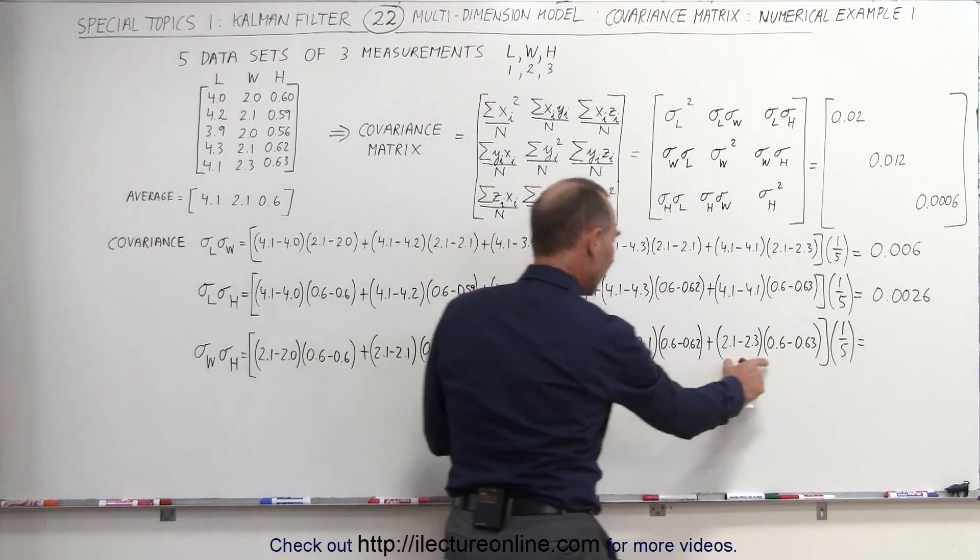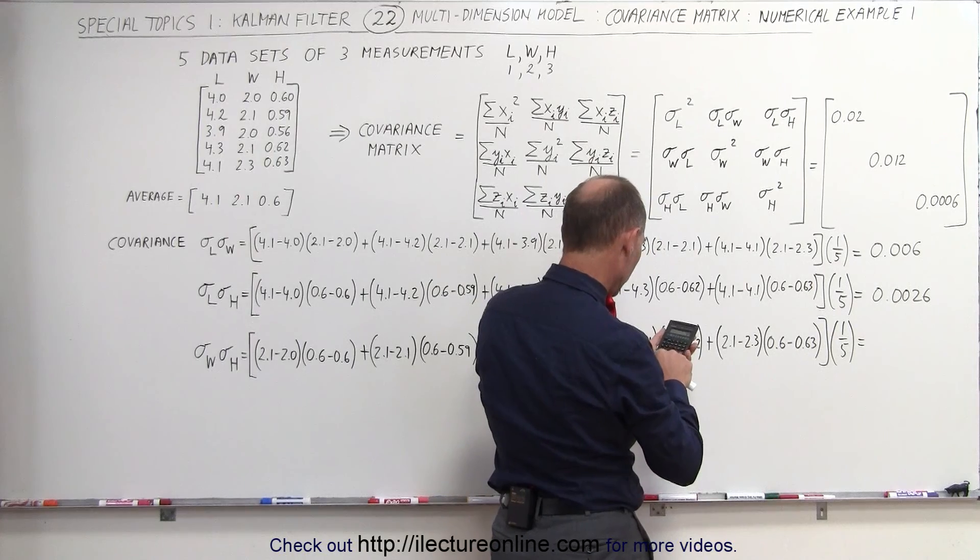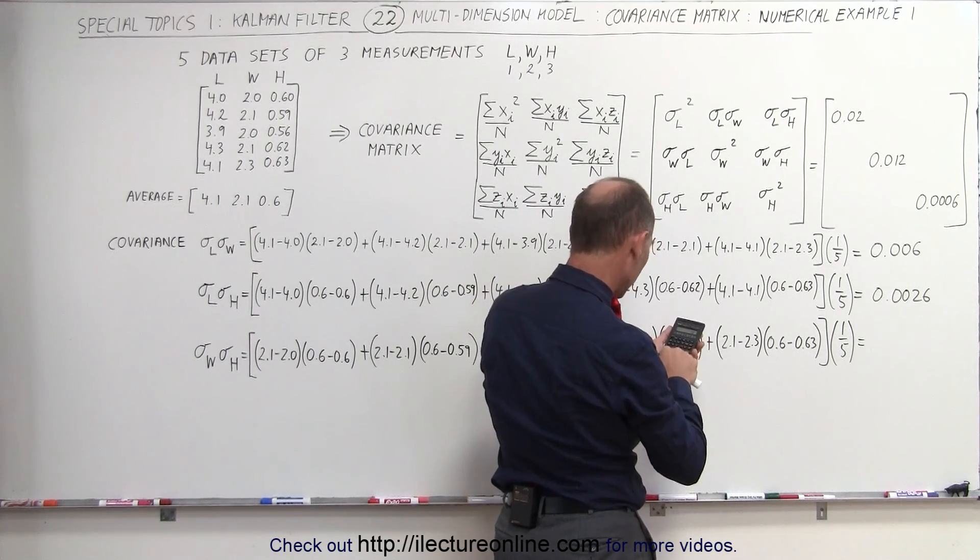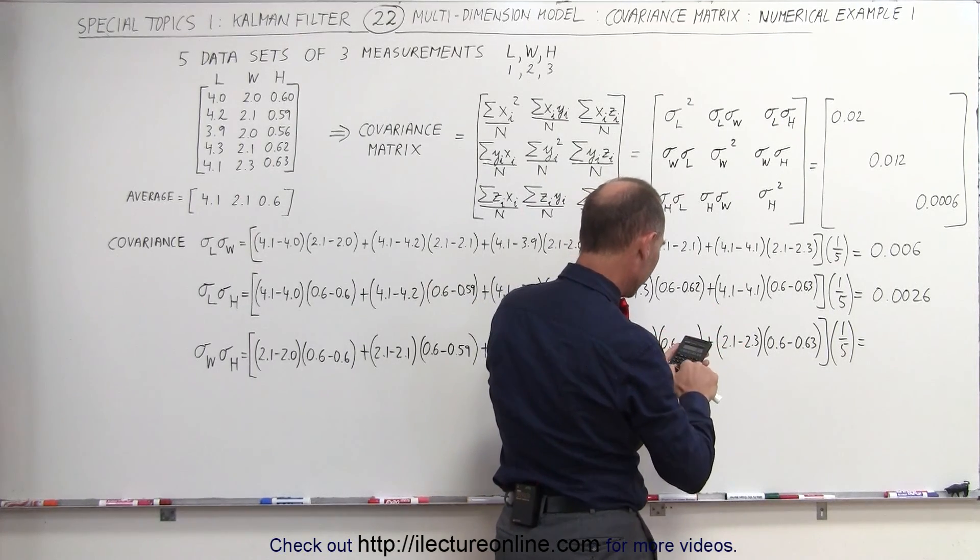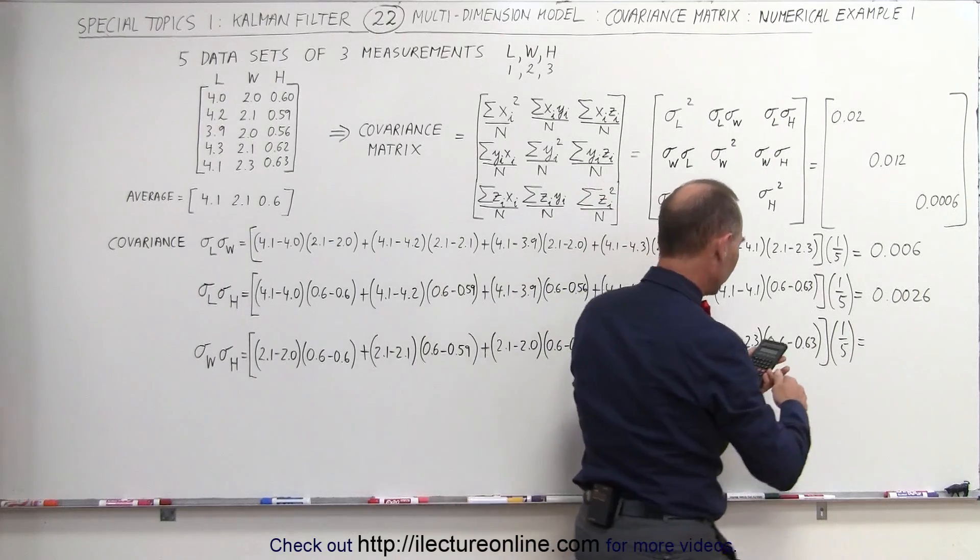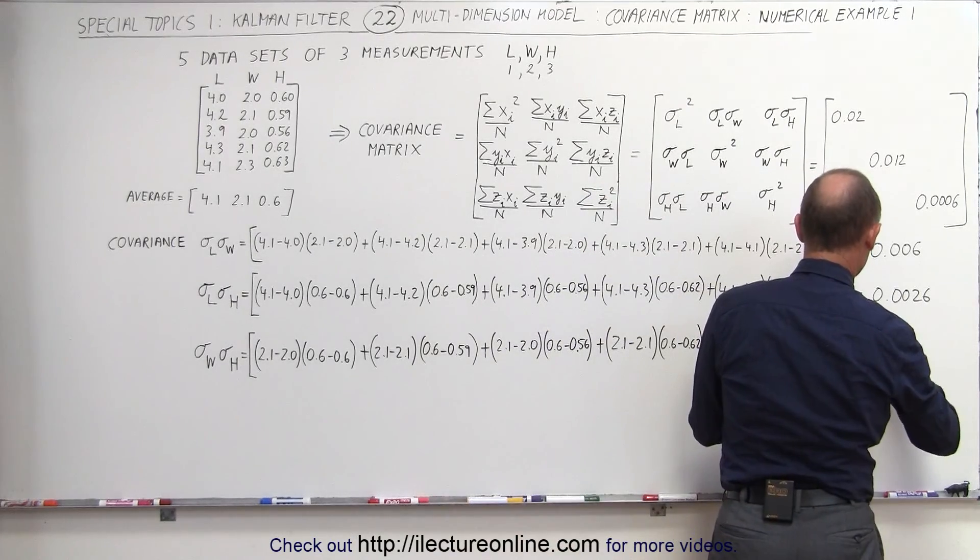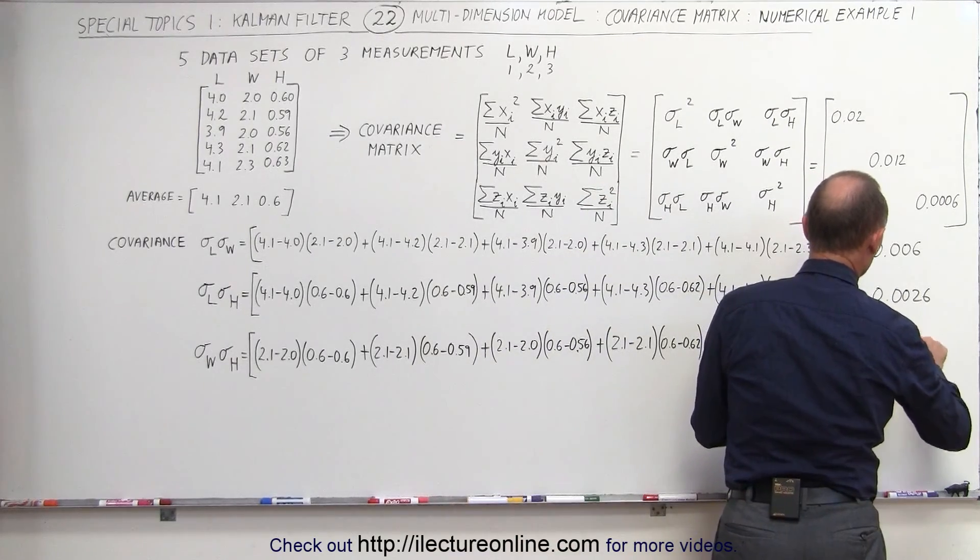This would be 0, and we add to that plus 0.2 times 0.03. Divide the whole thing by 5, and we get 0.002.